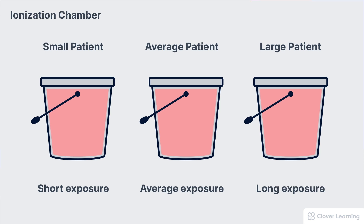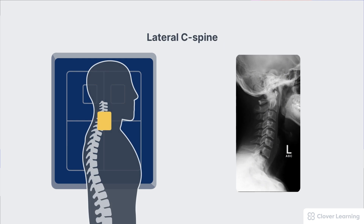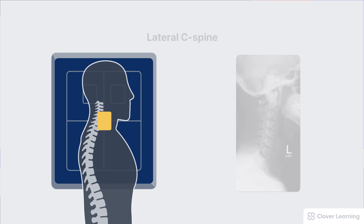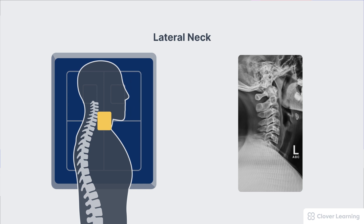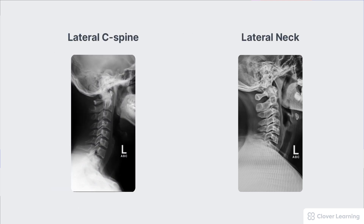In order for the AEC system to work correctly, you have to select the correct cells and position the patient correctly over the cells. The part of interest should always be placed directly over the ionization chamber. For example, when performing a lateral C-spine, the C-spine should be centered directly over the center AEC cell. When the center cell is activated, the C-spine will be perfectly exposed. A common mistake is to center anterior to the spine, with the soft tissues of the neck over the AEC cell. This results in a perfect exposure of the soft tissues but underexposure of the spine.